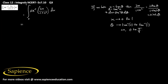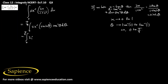So this integral can be rewritten as the integral from 0 to π/4 of sin⁻¹(sin 2θ) · sec²θ dθ. Since sin⁻¹(sin 2θ) = 2θ, this becomes the integral from 0 to π/4 of 2θ · sec²θ dθ.